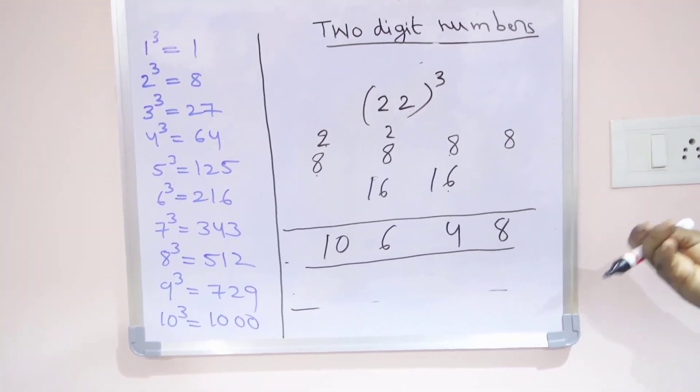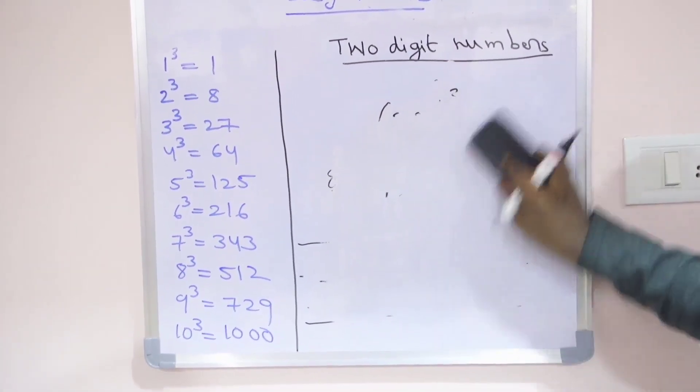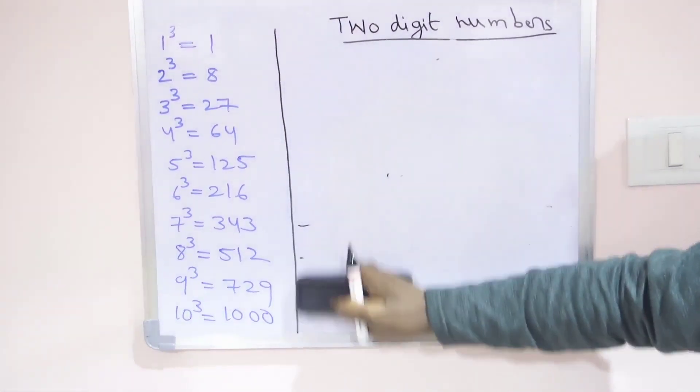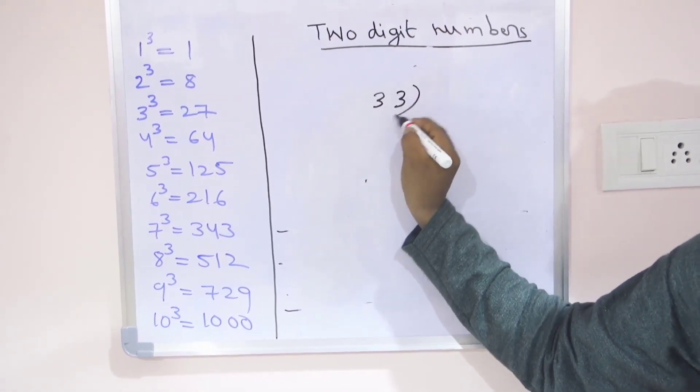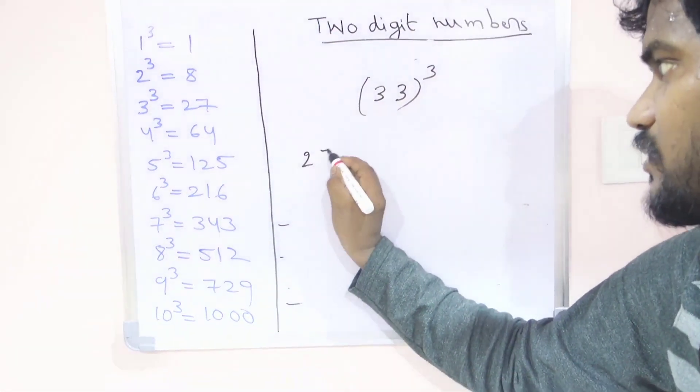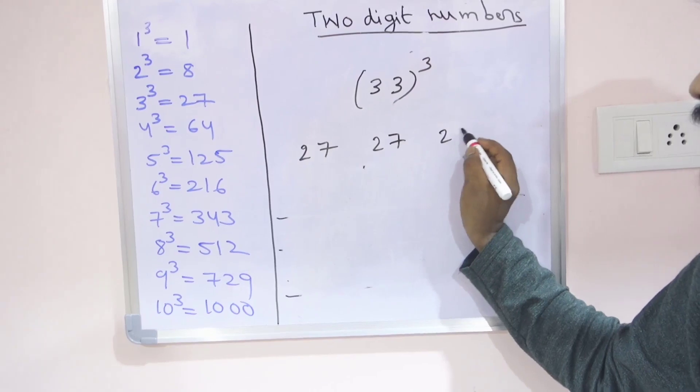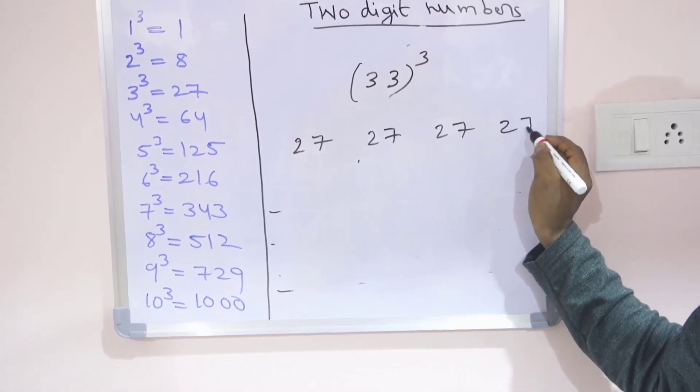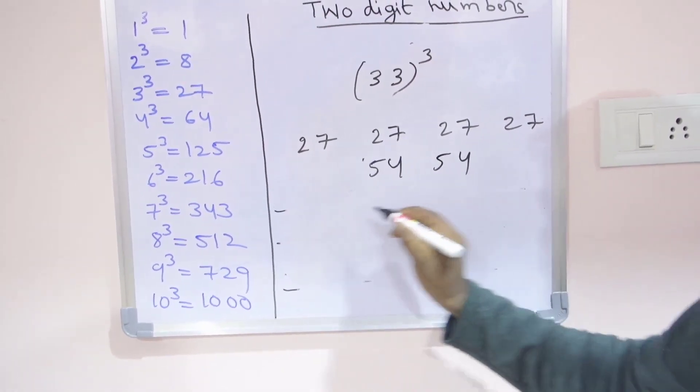Same method, suppose I am taking 33 cube. 33 whole cube. First of all, 3 cube means 27. 27, how many times we can write? Four times. 27, 27, 27, 27. Next, middle of the numbers double: 54, here also 54, 27 double.